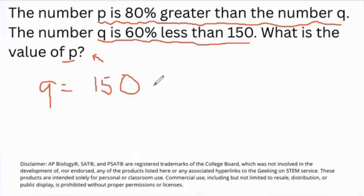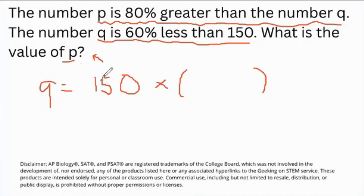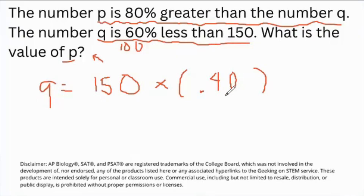So Q is 60% less than 150. What they're saying is we start with Q equals 150. They say we're subtracting a certain amount, but they're talking about percentages. So 150 is the initial amount, and the way you deduce the percentage is you multiply. We say 150 times not 60%, but 100 minus 60%, which is 0.40. How I got 0.40: it's 100 subtracted by 60, giving 40, then converted to a decimal. So it's reversed — multiplying that together gives us 60.